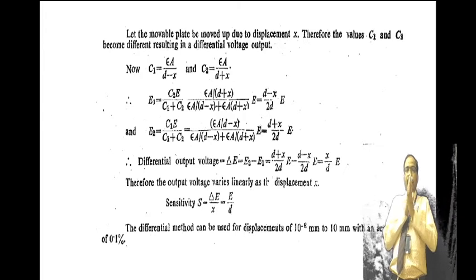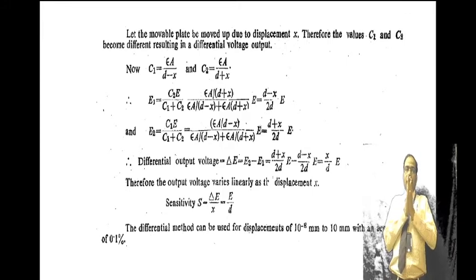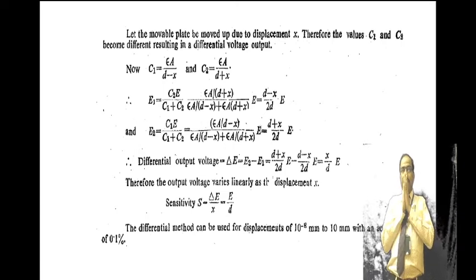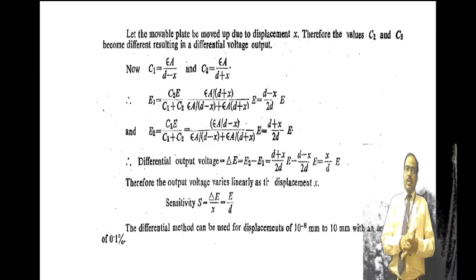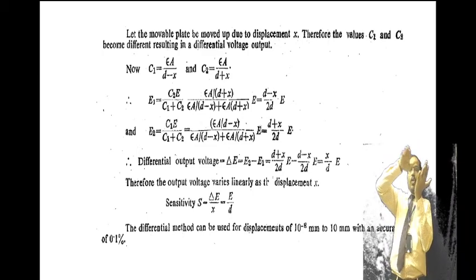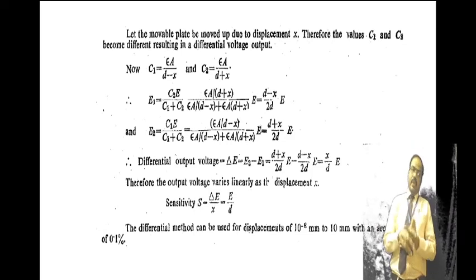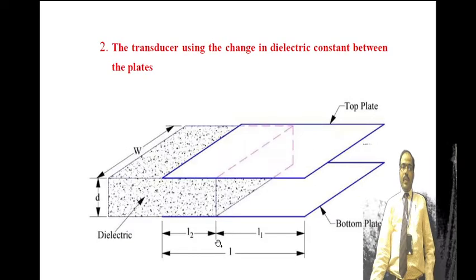Linearity can be achieved for a capacitive transducer based on change in distance by using a differential arrangement with three capacitor plates: two fixed plates and one movable plate placed between them.